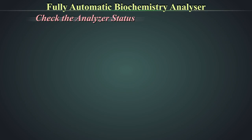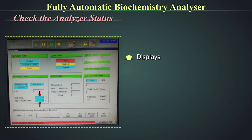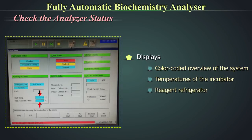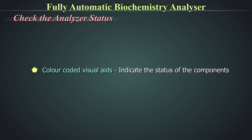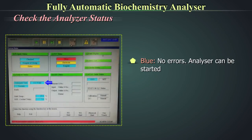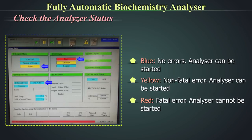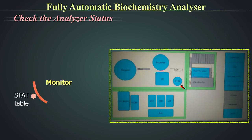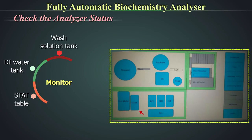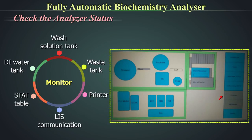The analyzer status menu displays a color-coded overview of the system and the temperatures of the incubator and reagent refrigerator. For example: blue means no errors and the analyzer can be started; yellow means a non-fatal error and the analyzer can be started; red means a fatal error and the analyzer cannot be started. The stat table, deionized water tank, wash solution tank, waste tank, printer, and LIS communication are also monitored similarly.